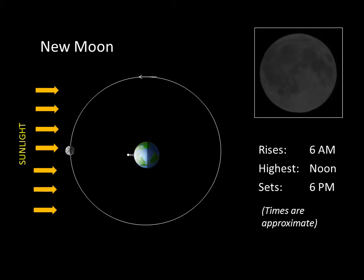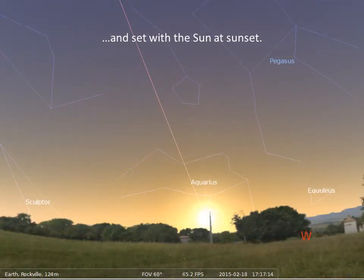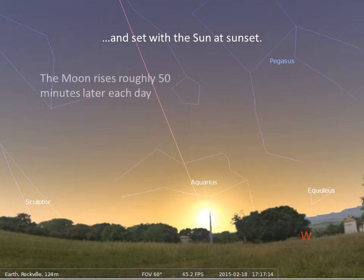When the Moon is new, we can't see it. This is because a new Moon is on the same side of the sky as the Sun. A new Moon will rise with the Sun at sunrise and set with the Sun at sunset — it is lost in the glare of the Sun. Each day, the Moon will rise a little bit later, about 50 minutes later. The Moon and the Sun will appear to separate from one another in the sky. Over the next few nights, we'll get to see more of the illuminated portion of the Moon.